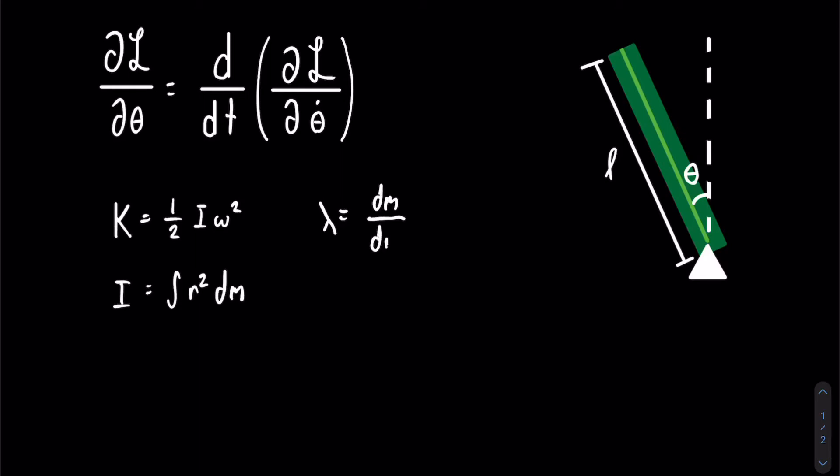We can make a substitution for dm, so we have the integral in terms of r, and we get that I is equal to the integral of r squared times lambda times dr.